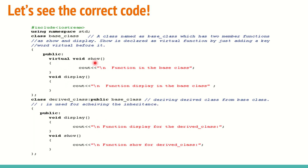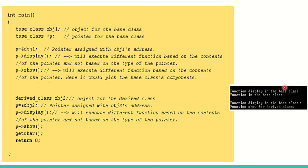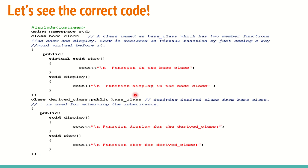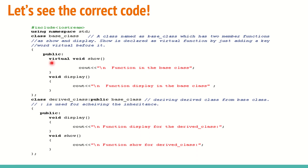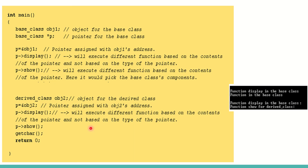With 'show' made virtual in the base class, the output changes correctly: 'function display in the base class' and 'function display in the derived class' appear as expected, and 'show' is now called properly. The virtual keyword tells the compiler that the address for 'show' is not available at compile time — it will be resolved at run time, so the correct overridden function is called.